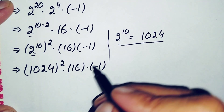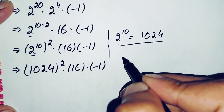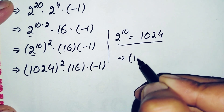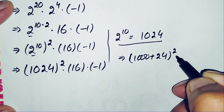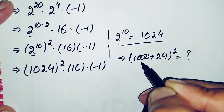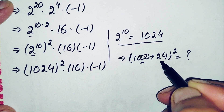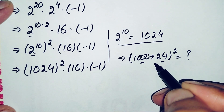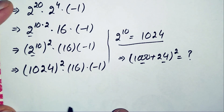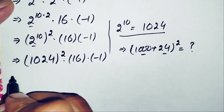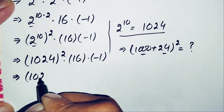To find 1024 squared, we can use two methods: the first is to write 1024 as (1000 plus 24) whole square and expand using the identity (a+b)² = a² + 2ab + b². The second way is to directly multiply 1024 by itself. We will use the second method.